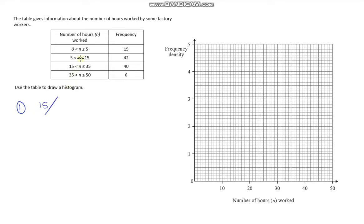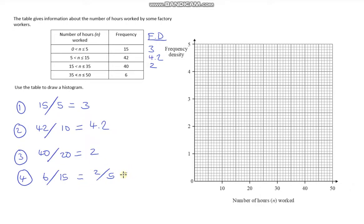The second one, our frequency is 42, our class interval is 10. 42 divided by 10 gives us 4.2. Number 3, we've got 40 and we're dividing that by 20. 40 divided by 20 gives us 2. Last but not least, our frequency is 6, our class interval is 15. 6 divided by 15, well that's the same as 2 divided by 5, dividing top and bottom by 3. I know that 2 fifths is the same as 0.4. Now I've got my 4 frequency densities, I can just plot them.